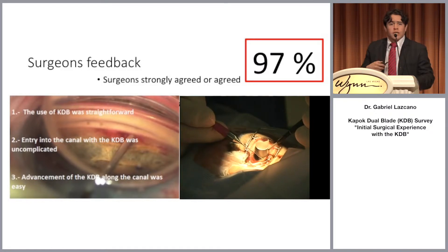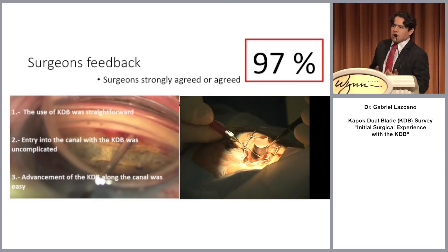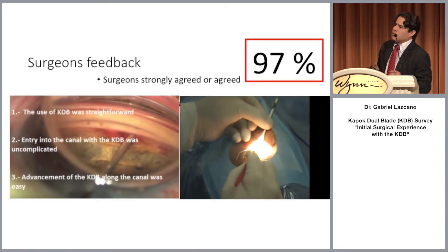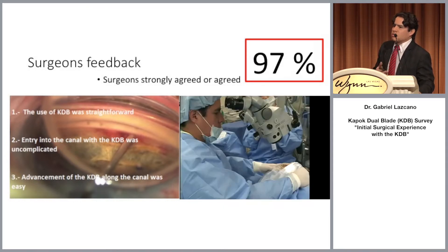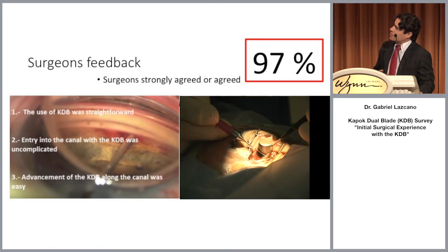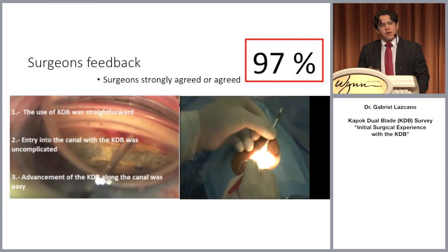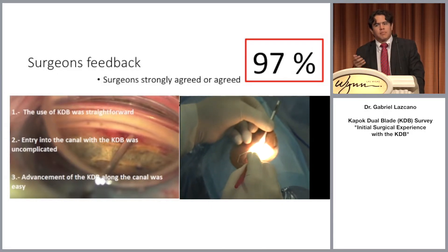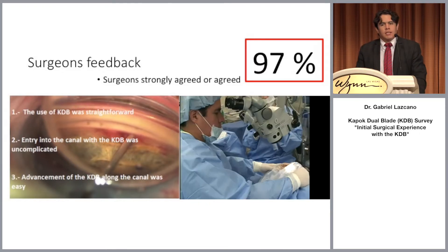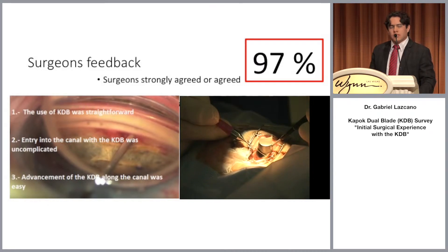We asked the surgeons three simple questions to evaluate ease of use. The first was if the incision was straightforward toward the trabecular meshwork. The second, how easy was the entry into the canal. And the third, if once in the canal, the advancement of the KDB was easy or not. In 97% of the cases, the surgeons agreed or strongly agreed with these three points.